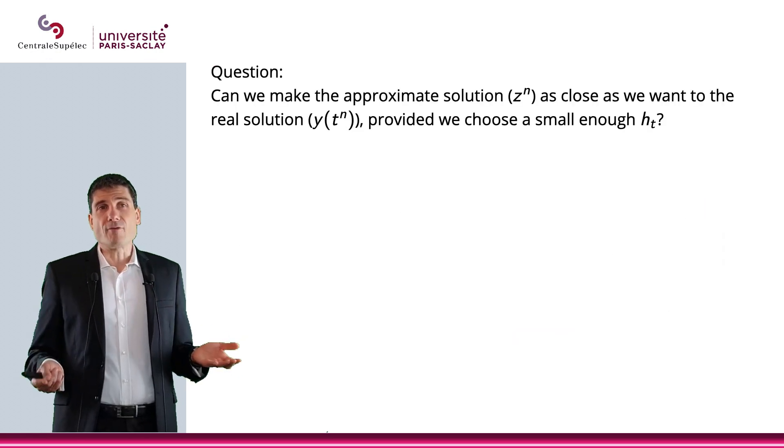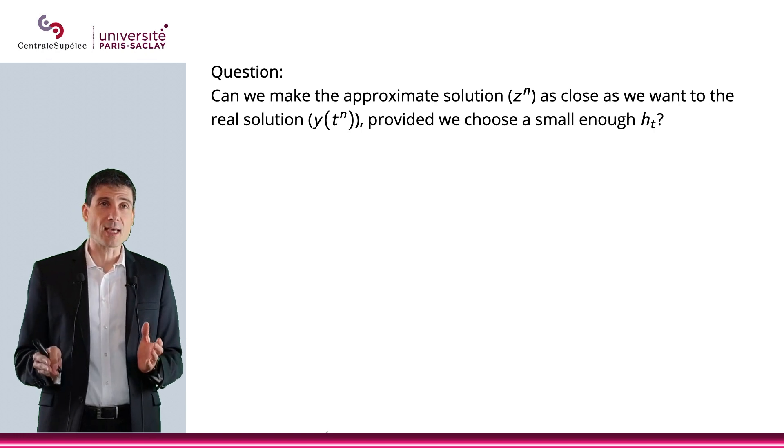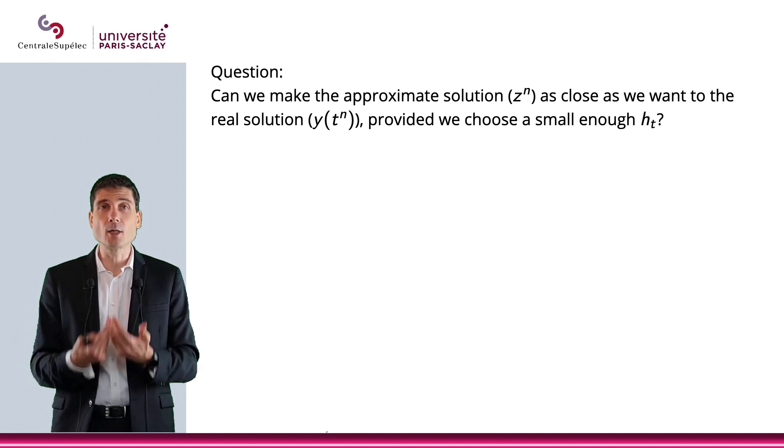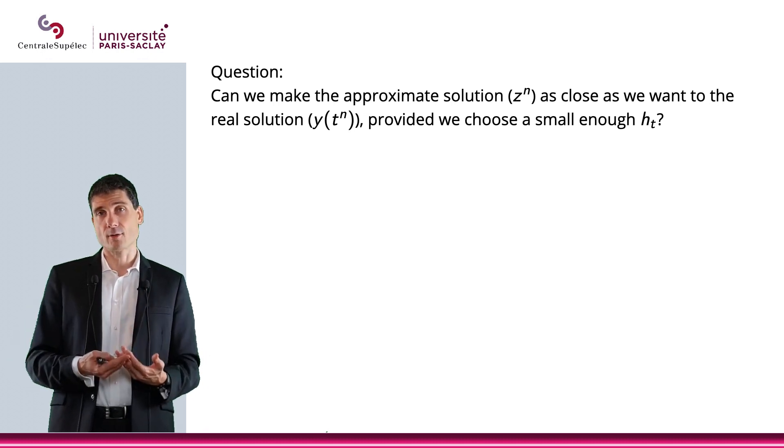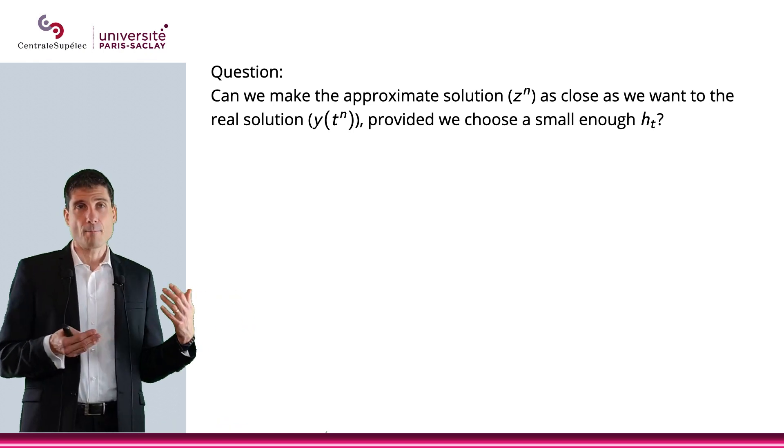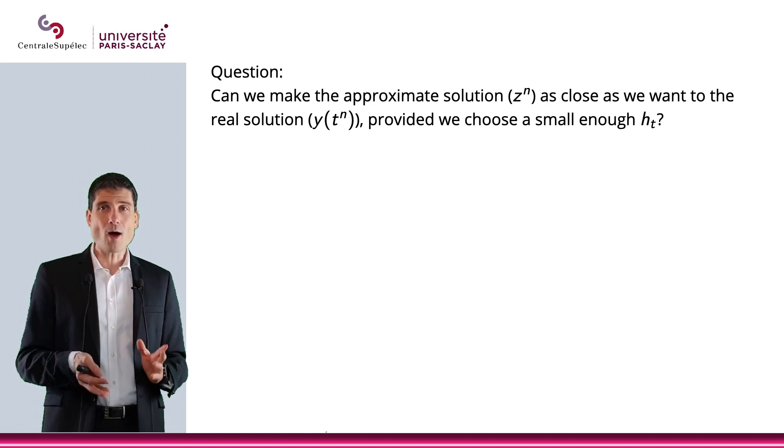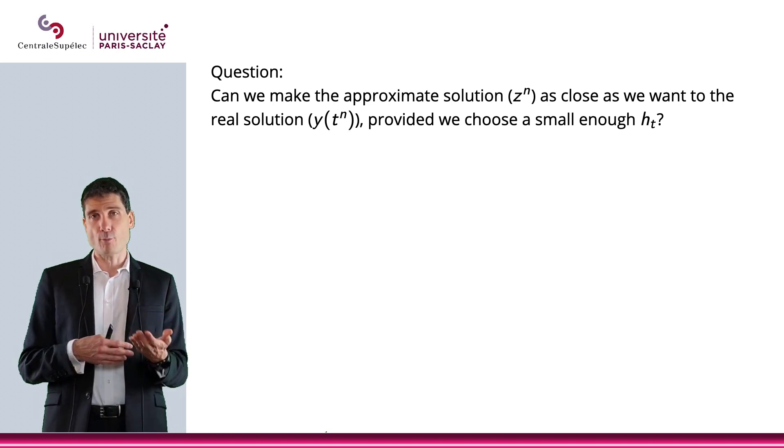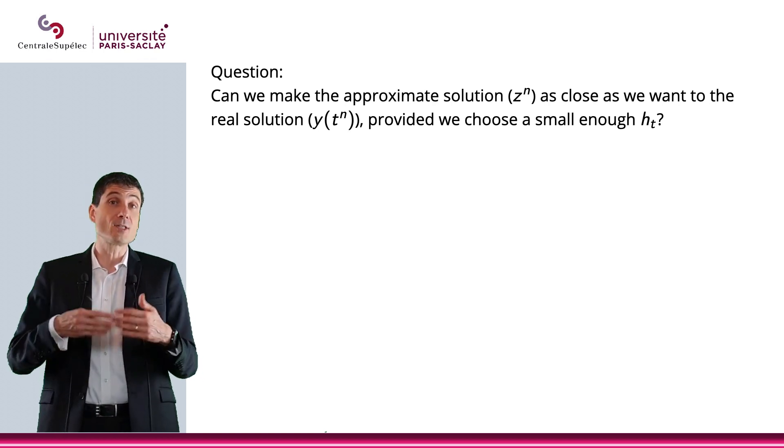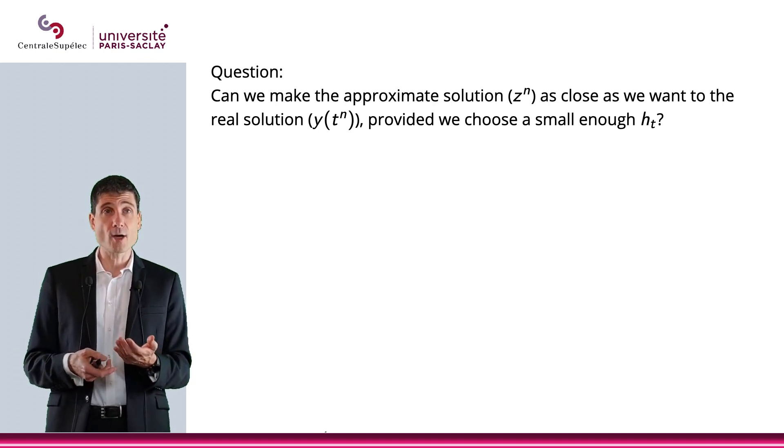Now, there is a question that everybody is waiting for the answer to, which is, can we actually make the approximate solution, Zn, as close as we want to the real solution? I mean, we see that the error increased in the previous example, but we had a pretty large H. H was 0.5. What would happen if instead of choosing 0.5, we were to choose 0.25 or 0.1, or 0.01? Would that actually improve things? Well, that is a very natural question.